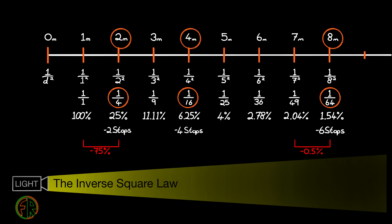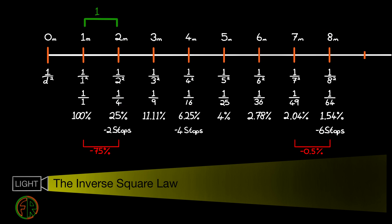Here is the pattern: for every 2 stops of light to be lost, we must double the distance. Going from 1 to 2 meters — a total distance of 1 meter — we lost 2 stops of light. Then we had to go from 2 meters to 4 meters, 2 more meters for the next 2 stops of light to be lost. And then it took 4 more meters to reach a total of 8 meters for the next 2 stops. This all scales, so to lose another 2 stops, I would need to double the 8 meter distance again to 16 meters, for a total of 8 stops of light lost.